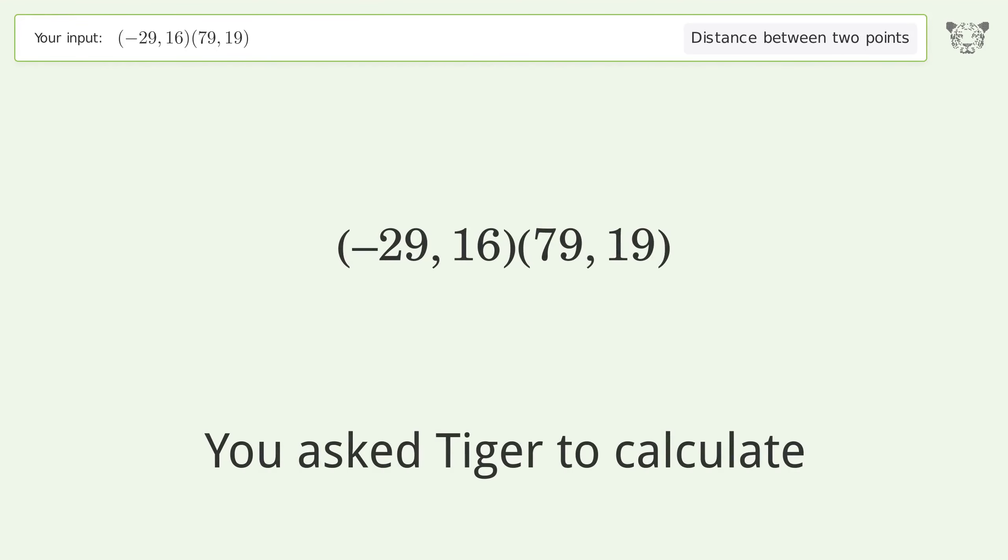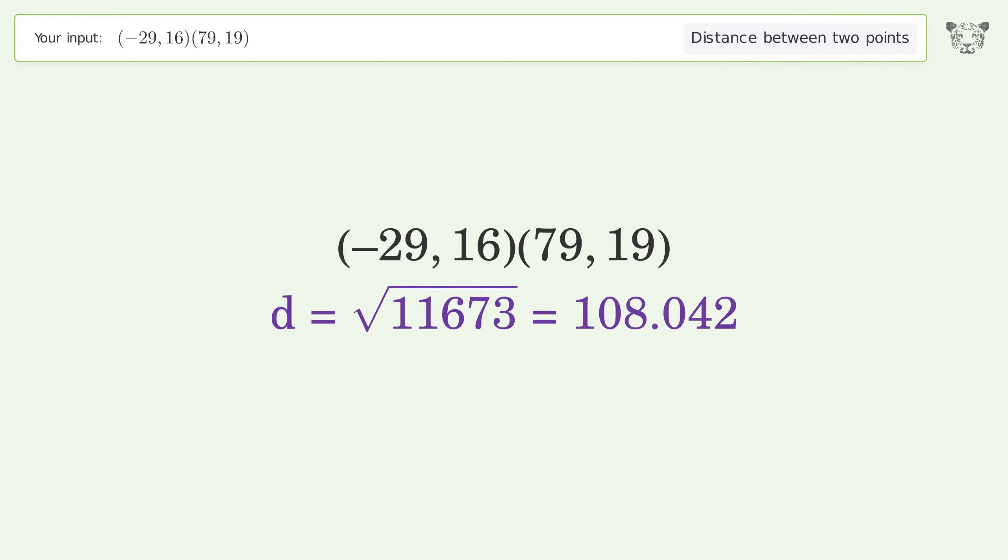You asked Tiger to calculate the distance between two points. The distance between the two points is the square root of 11673 or 108.042.